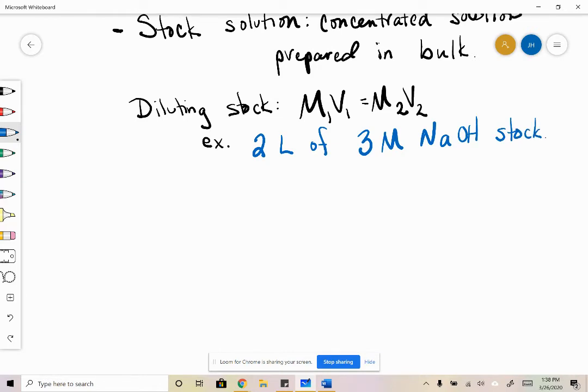In order to do that, we would first take our 3 molar solution, multiply it by 2 liters. That tells us we need 6 moles of NaOH. The molar mass of NaOH is about 40 grams per mole.